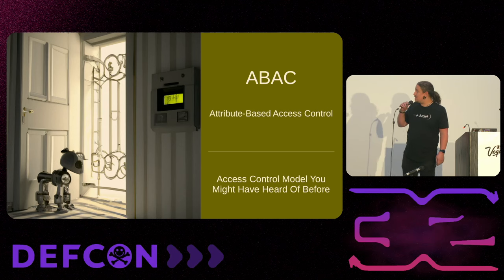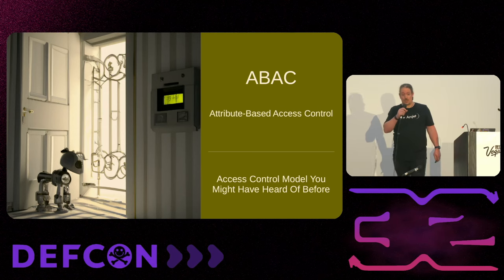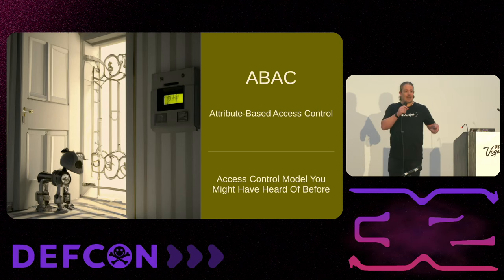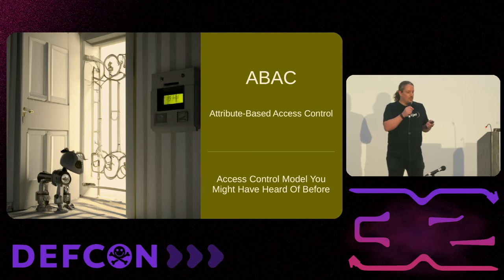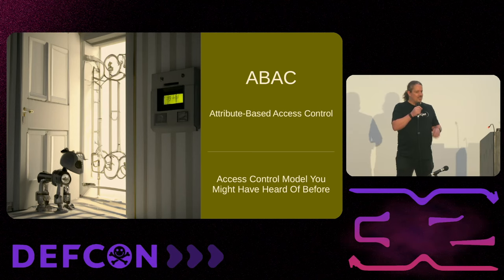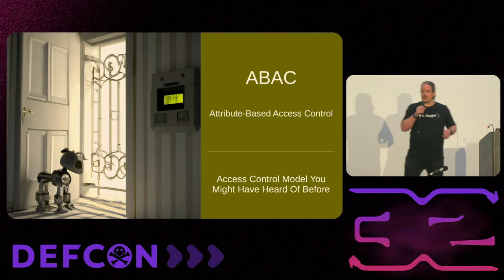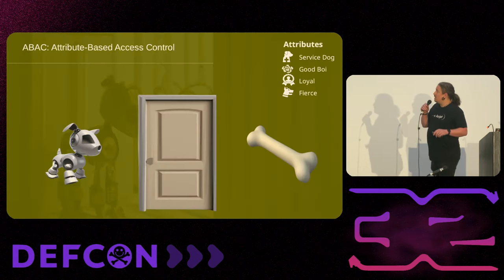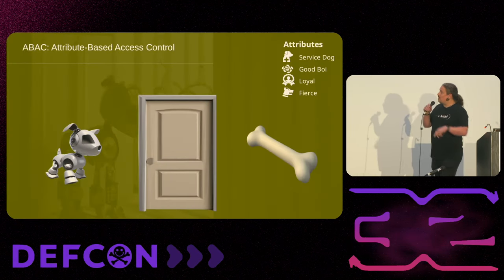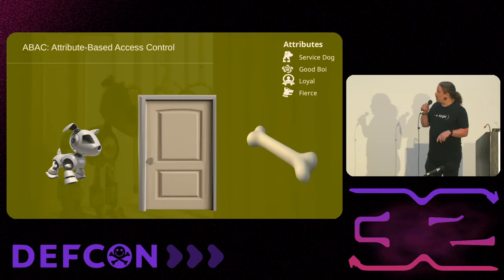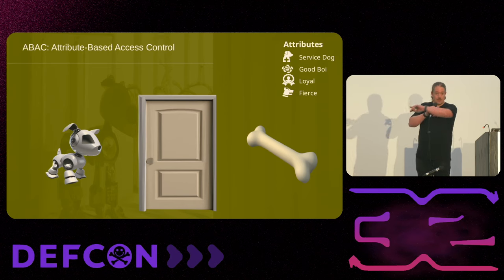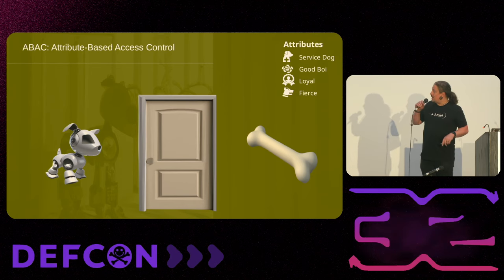Next: attribute-based access control. This is kind of like role-based — because you could say the role is an attribute of a person — but with so many more layers on top of this. We've got four attributes here of the dog. This is Min, a white Siberian husky — actual real dogs in my life. The four characteristics are: service dog, good boy, loyal, and fierce.